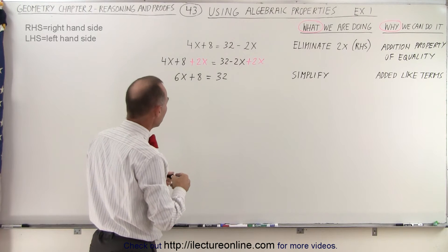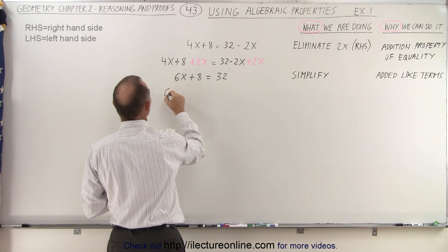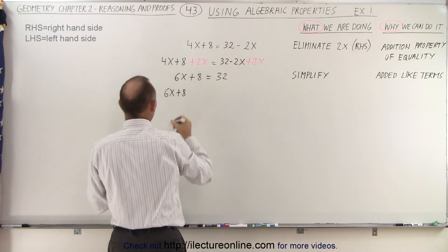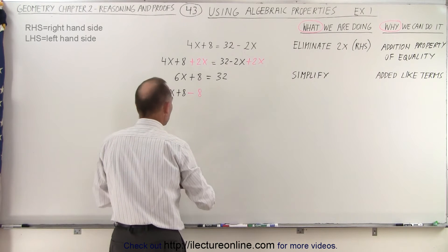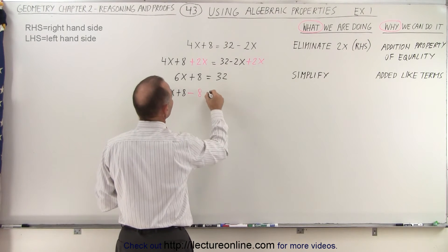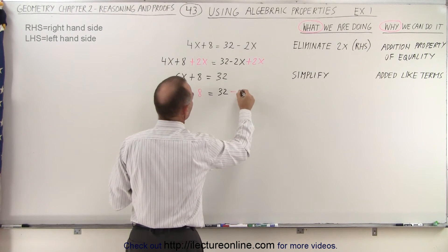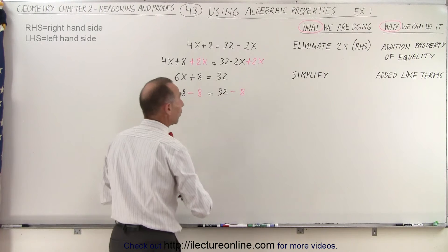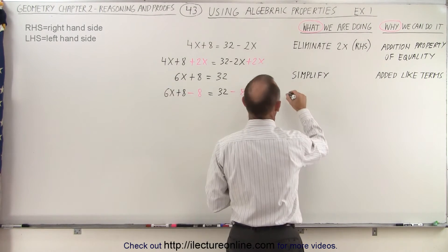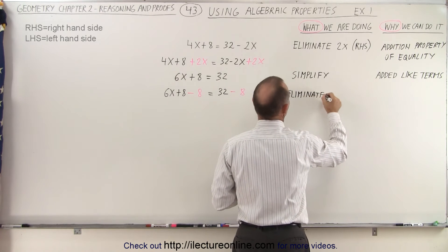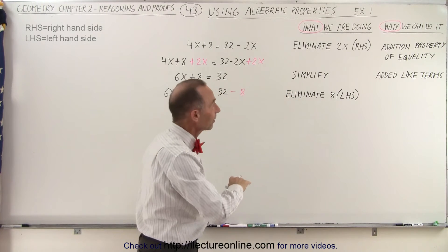Next, I want to get rid of the plus 8 on the left side. So from 6x plus 8, I'm going to subtract an 8 from the left side. Of course, when I subtract an 8 from the left side, I must do the same on the right side. I'm eliminating the 8 on the left-hand side — LHS means left-hand side, RHS means right-hand side.